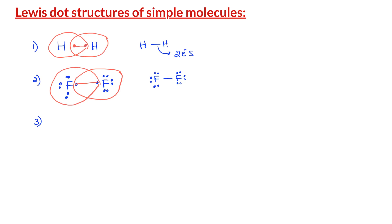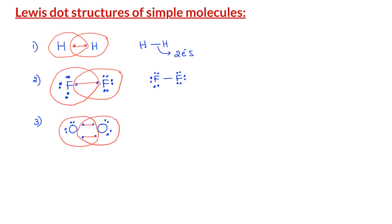Let us do another example: the O₂ molecule. Each of the participating oxygens belongs to group 6A, therefore it has 6 valence electrons — two single electrons and two pairs of electrons. Each oxygen is short of 2 electrons to get an octet configuration. Therefore, each oxygen donates two electrons to form two pairs, and those two pairs are shared equally between the two oxygen atoms, giving both oxygens octet configuration. The Lewis dot structure of the O₂ molecule shows a double bond between the two oxygen atoms.